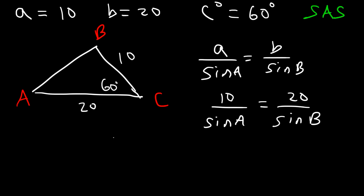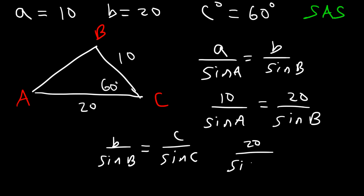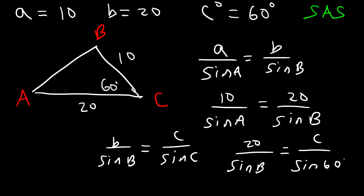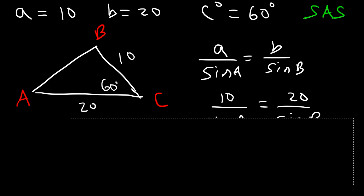And if we try to use B over sine B equals C over sine C, we're still missing angle B and we're missing side C. So whenever you have all different letters you cannot use the law of sines to solve it. However, there's something else that we can use, and that is the law of cosines.